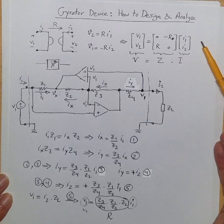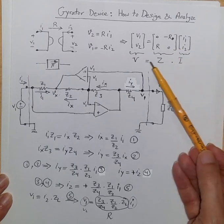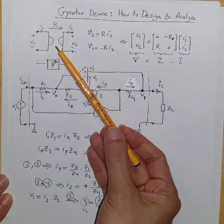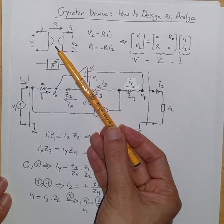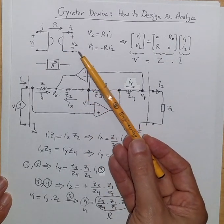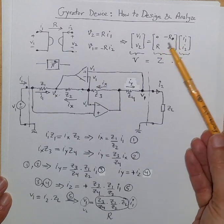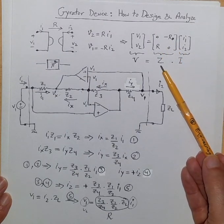Because of this anti-symmetricity which is pure, the gyrator device is actually a fully non-reciprocal circuit because of this anti-symmetric Z or impedance matrix.